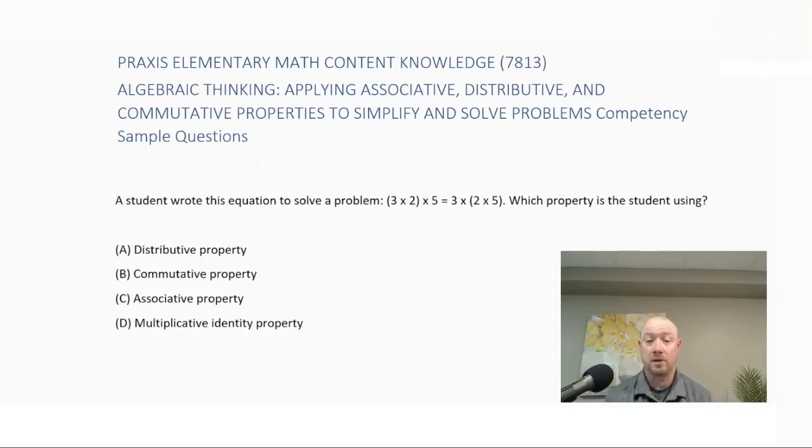A student wrote this equation to solve a problem: (3 × 2) × 5 = 3 × (2 × 5). Which property is the student using? Is it A, distributive property, B, commutative property, C, associative property, or D, multiplicative identity property?